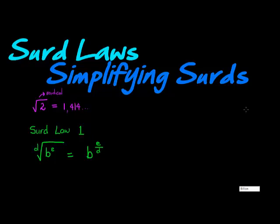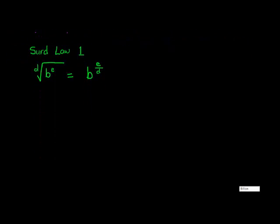Surd law 2 follows from the exponential laws. Surd law 2 says that when I have the d-th root of a base and an exponent, and I multiply it with the d-th root of another base. Let's call this base 1 and this one base 2, and this exponent 1 and this exponent 2. They don't have to be the same at all. The only condition is that it's the same radical. When we are multiplying two same radicals with each other,